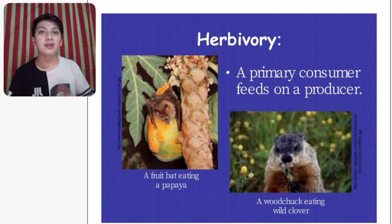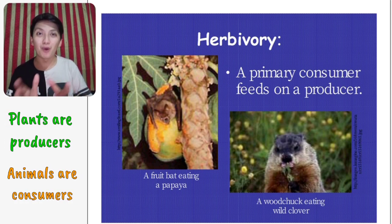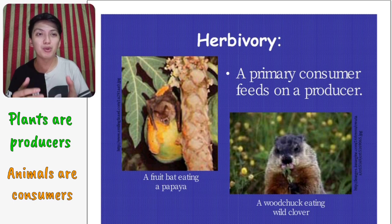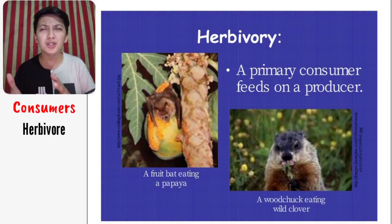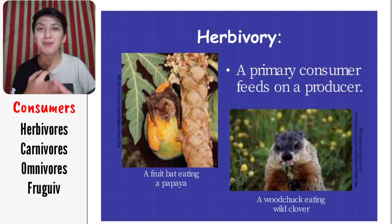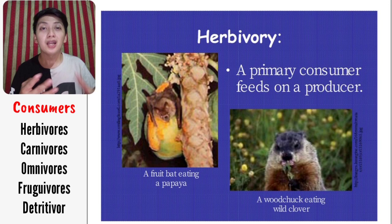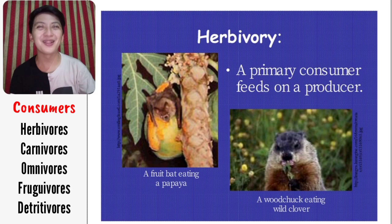Next is herbivory — a mode of nutrition of an organism. Herbivores are the first or primary consumer, and a primary consumer feeds on a producer. Remember, plants are producers and animals are consumers. As you can see, we have a fruit bat eating a papaya and a woodchuck eating a wild clover. Animals that eat plants are herbivores, animals that eat meat are carnivores, animals that eat both plants and meat are omnivores, those that eat only fruit are frugivores, and those that eat detritus are called detritivores.